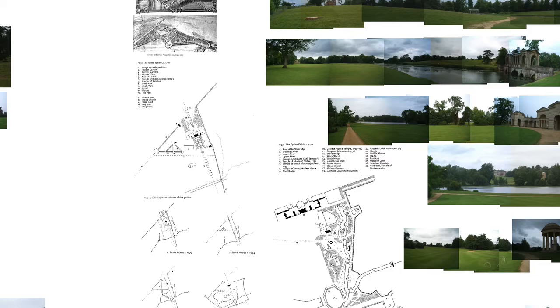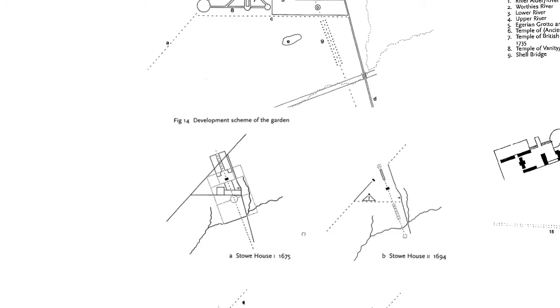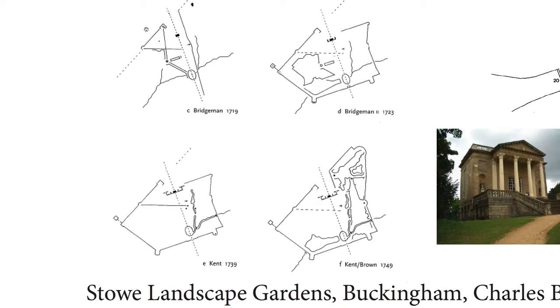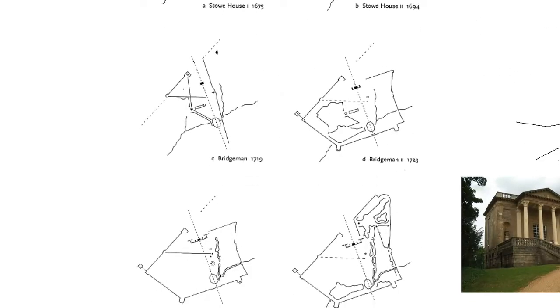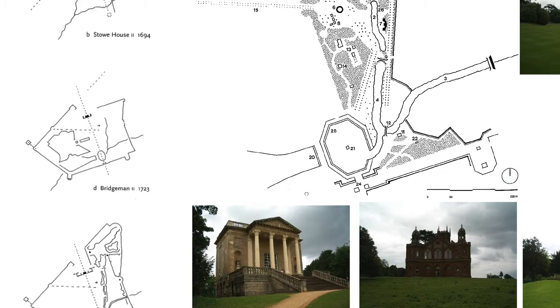This connects to the transition between second and third nature. You can see how the transition occurred at Stowe — earlier geometry coming in, then the Baroque structure breaking down. By the time Kent comes in, all the axiality and the patte d'oie are gone. The lake was converted from a hexagon into something entirely naturalised. The water tributaries were increased until by Brown's time it was an entirely naturalised landscape.